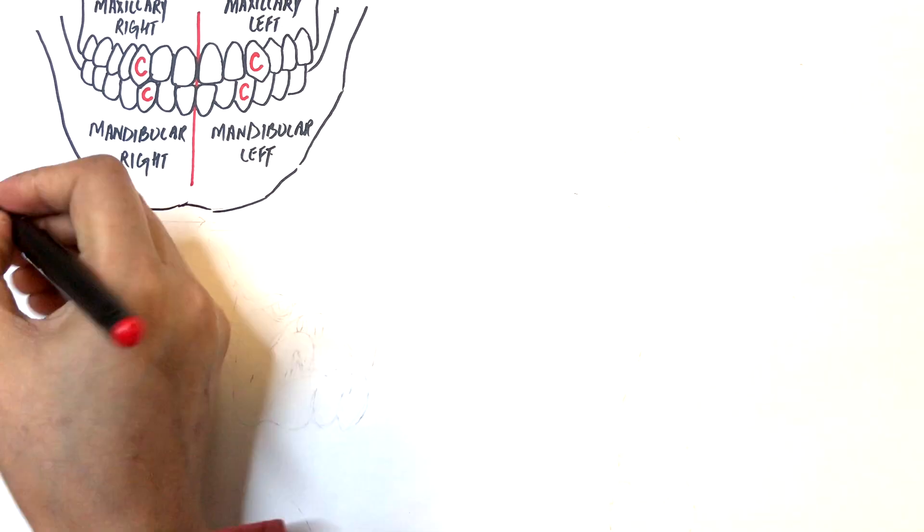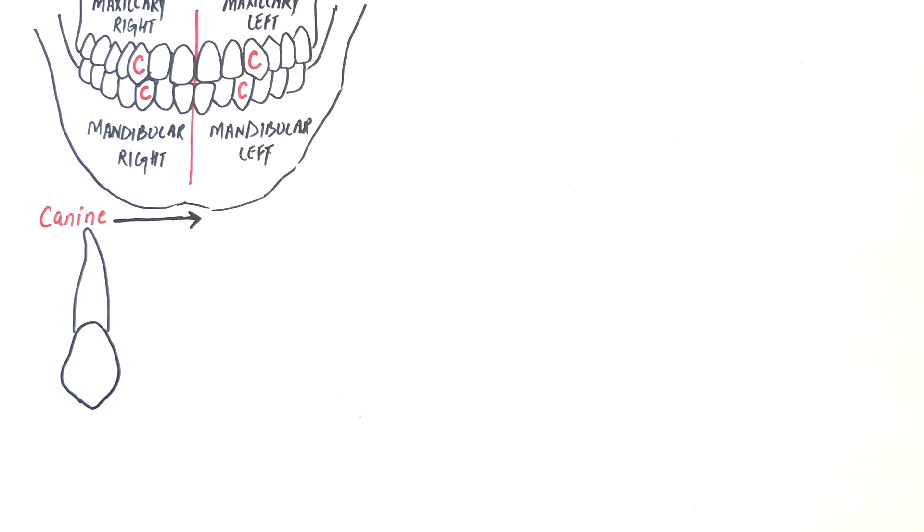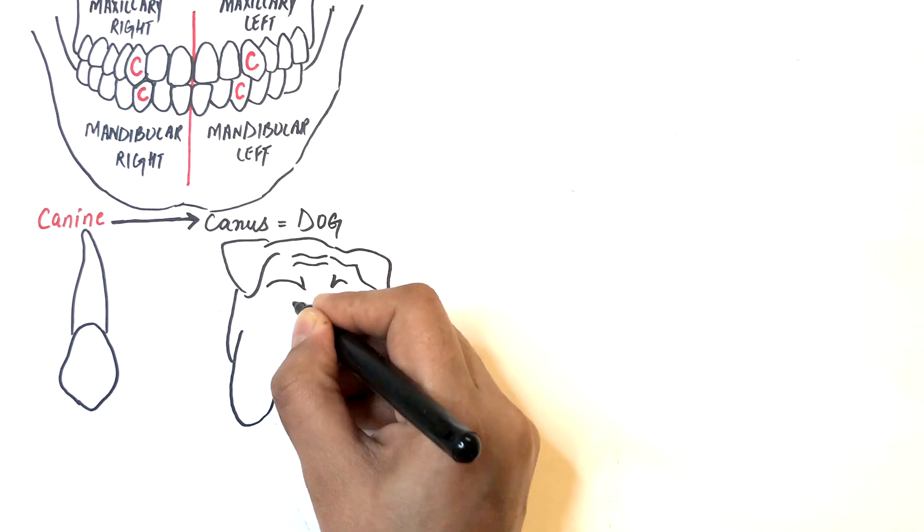The name canine is derived from the Latin word canas meaning dog, and they are given this name because of their resemblance to a dog's teeth.